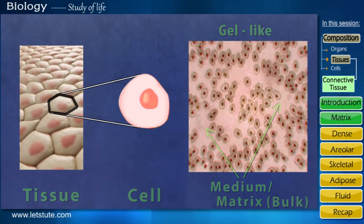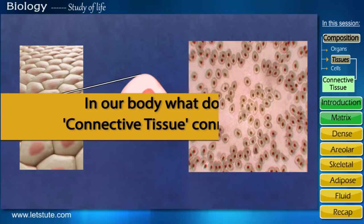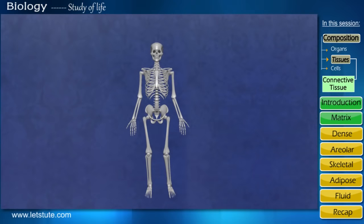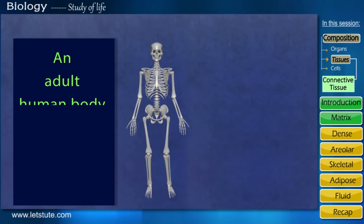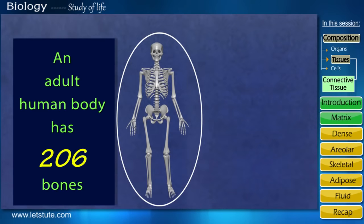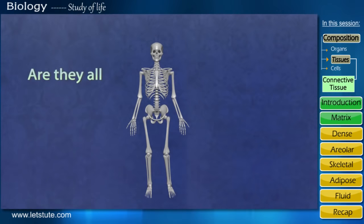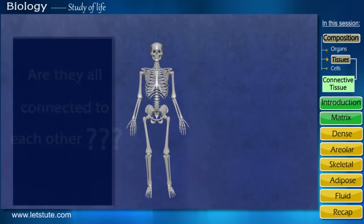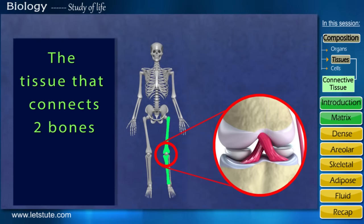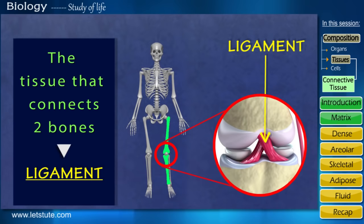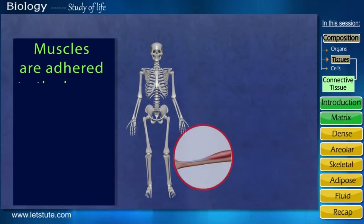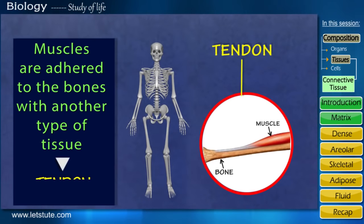Since it's a connective tissue, what does it connect in our body? Let's look at the human skeleton. An adult human body has 206 bones. They are all connected with this special type of connective tissue. The tissue that connects two bones is called a ligament. Apart from connecting bones, muscles are also adhered to the bones with another type of tissue called the tendon.